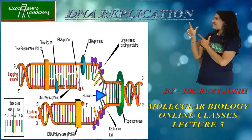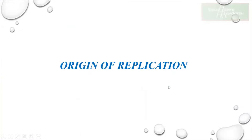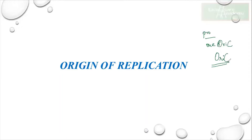Hello and welcome back to Excelsior Academy. In the previous lecture we talked about the replication fork and the different enzymes required — we also discussed RNase H and DNA ligase. In today's lecture we will start proper replication, beginning from the origin. In the case of prokaryotes there is only one origin of replication, known as oriC.